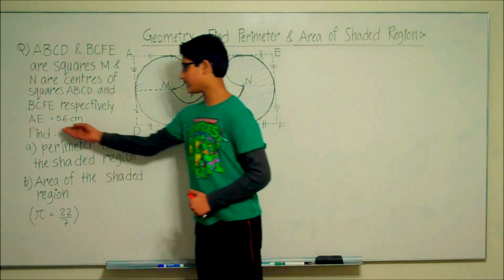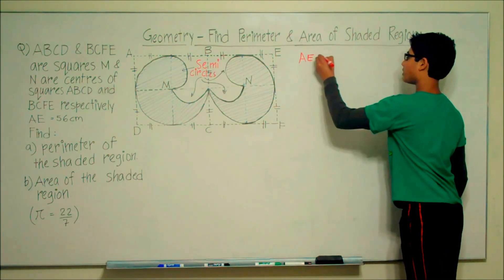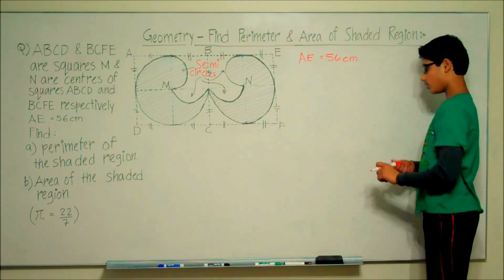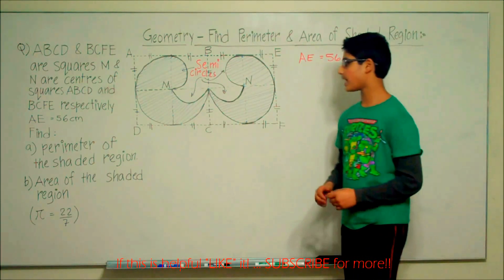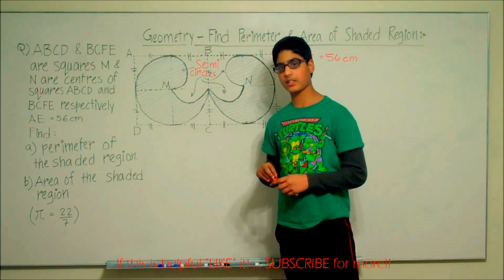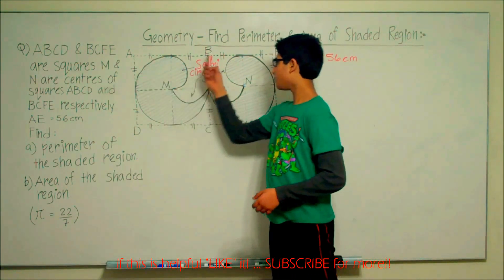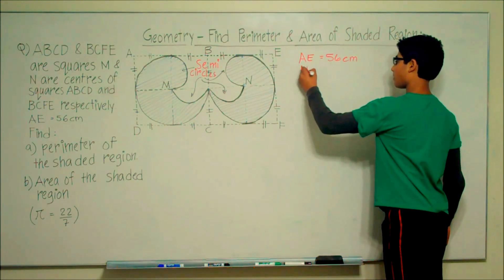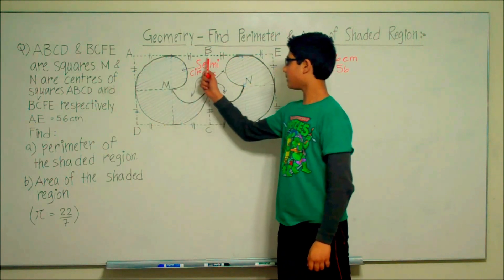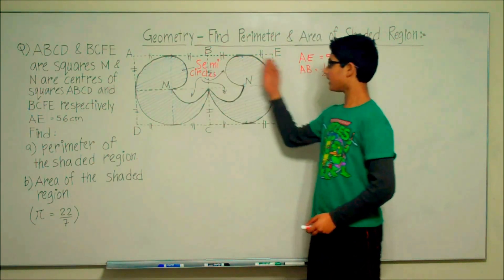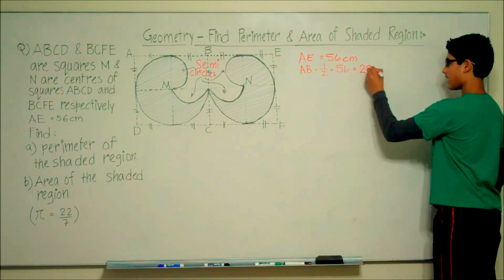The problem gives us that AE is equal to 56 centimeters. This portion from here to here is 56 centimeters. The diagram is divided up into two squares: ABCD and BCFE. Line AB is equal to half of 56 centimeters, because AB equals BE and AB plus BE equals AE. So AB is equal to half of 56 centimeters, which is 28 centimeters.